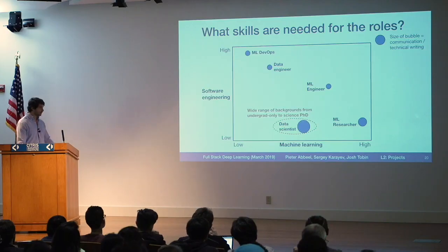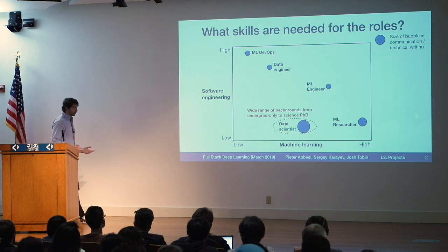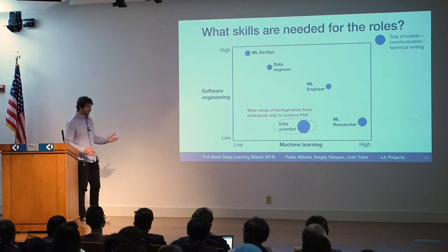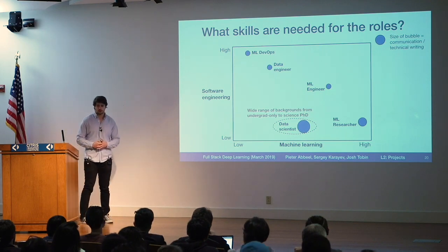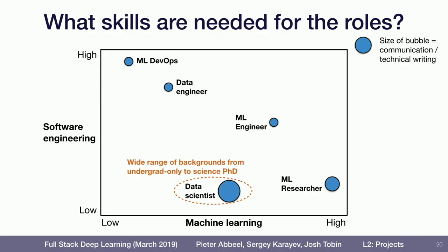Lastly, data scientists — since this is a catch-all term, this can mean basically anything. There are people coming straight from undergrad, and there are now degree programs in data science. But sometimes these folks are also, for example, astrophysics PhDs who decided to move into the world of data science.